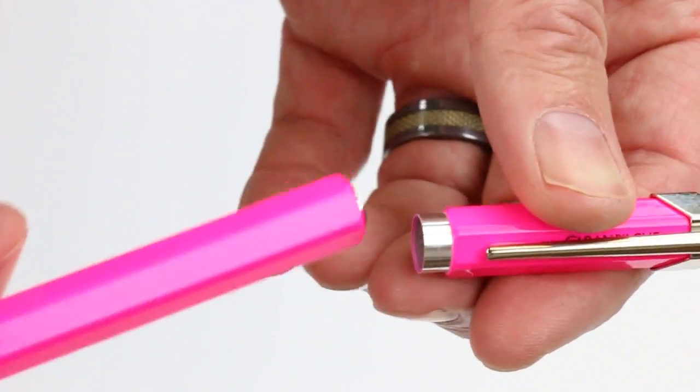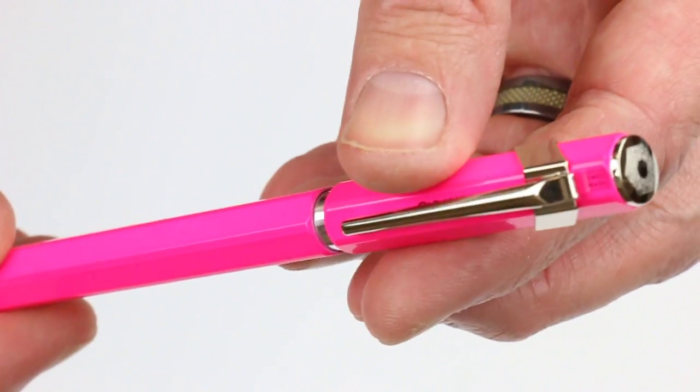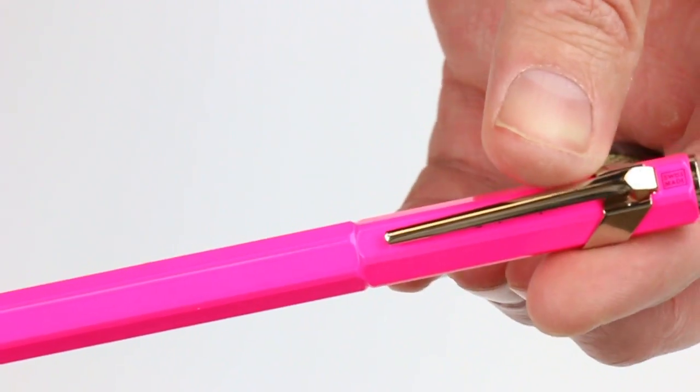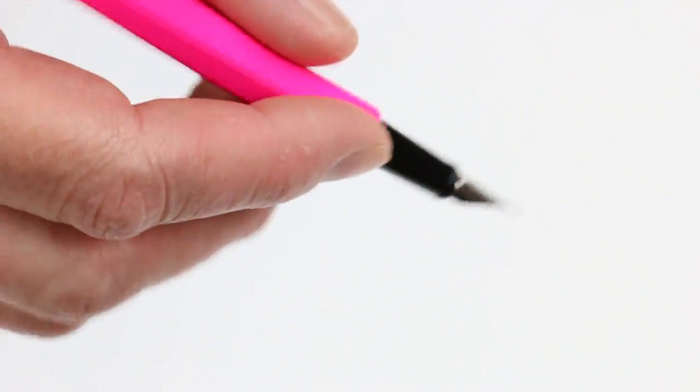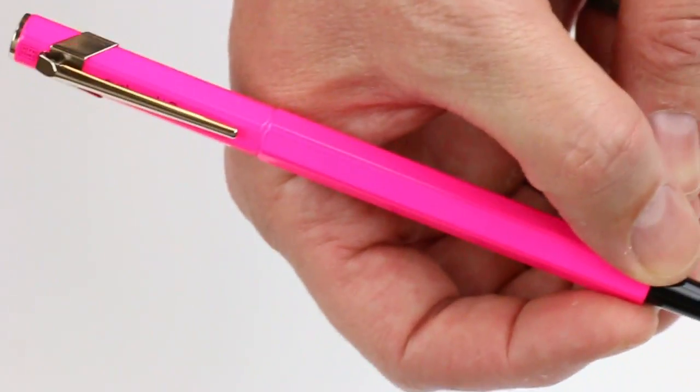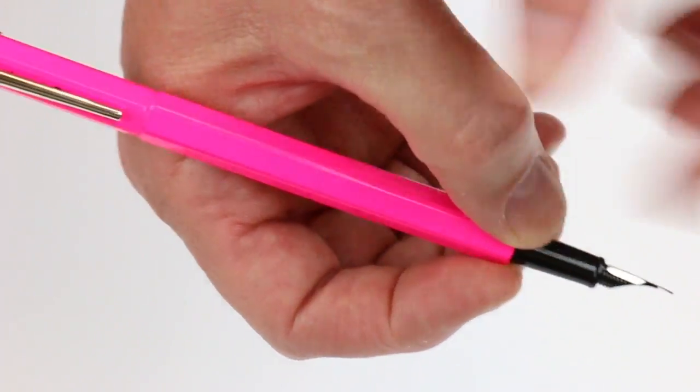The cap is pressure fit. It just slides off. It can be posted and it slides on the end of the barrel of the pen. It makes a pretty long pen. You can see how long that is with that cap posted.